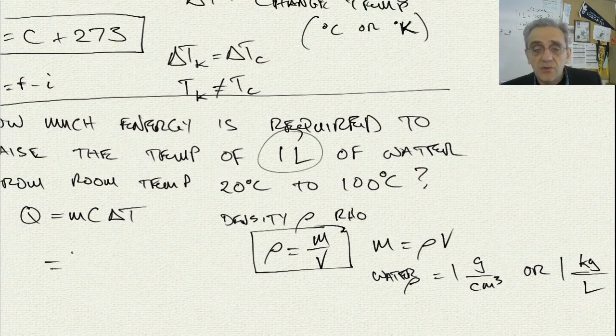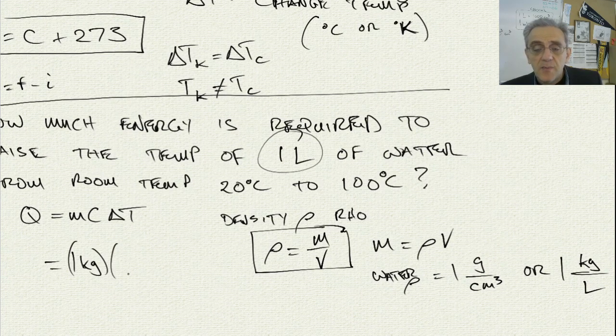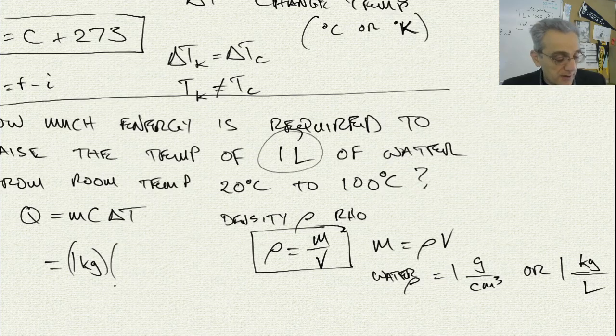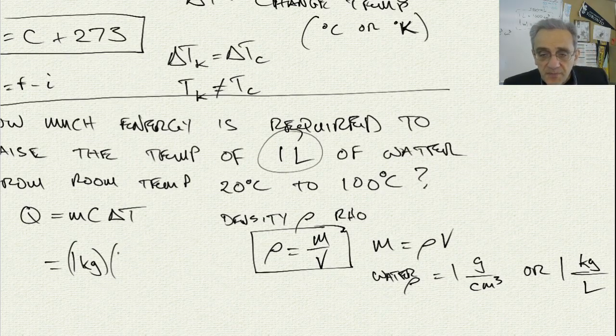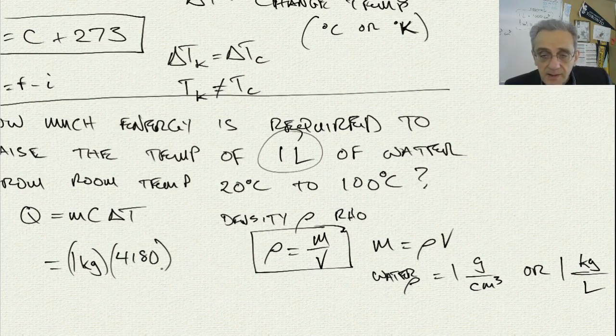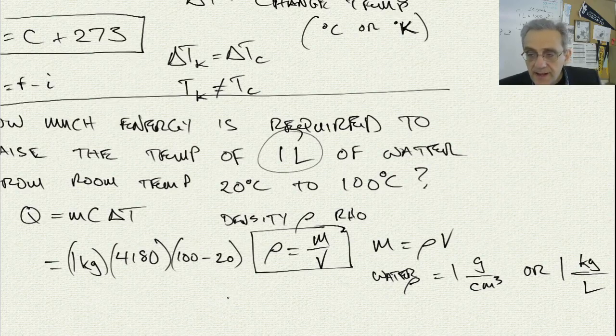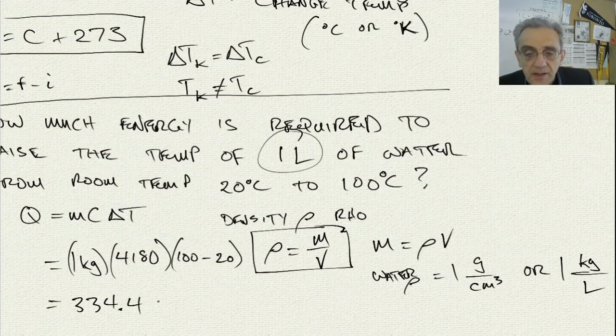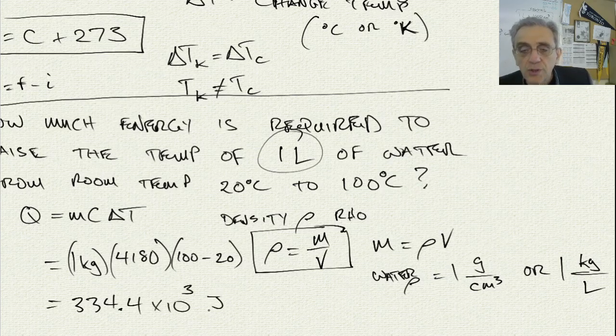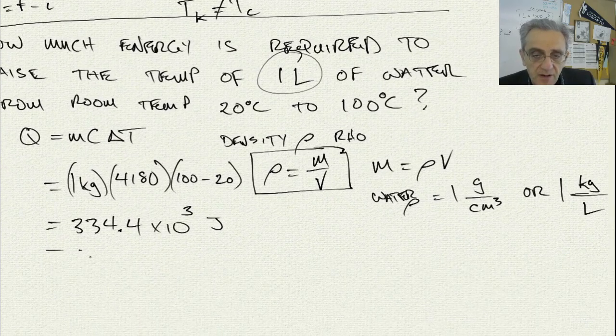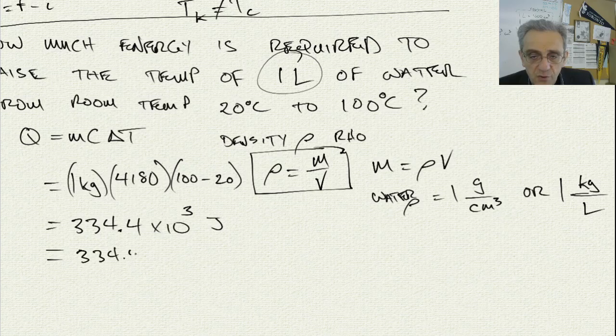So we can say 1 kilogram of water, because it's 1 liter, multiplied by the specific heat capacity of water, which is 4,180. And now we go 100 minus 20. And when we do this multiplication, I'm getting an answer of 334.4 times 10 to the power of 3 joules, or it's equal to 334.4 kilojoules.